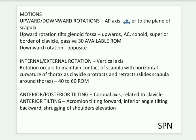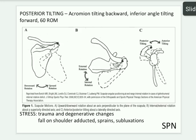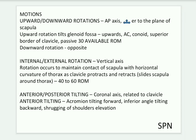Anterior and posterior tilting occurs at the coronal axis relative to the clavicle. Anterior tilting involves the acromion process tilting forward, with the inferior angle of the scapula moving backward — this action corresponds to shrugging of the shoulders in elevation. Posterior tilting sees the acromion tilting backward and the inferior angle tilting forward, with a range of motion of about 60 degrees.